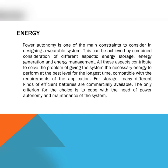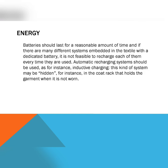For storage, many different kinds of efficient batteries are commercially available — for example, lithium-ion batteries. The criteria for choice is to cope with the need for power, autonomy, and maintenance of the system. Batteries should last for a reasonable amount of time, and if there are many different systems embedded in the textiles with dedicated batteries, it is not feasible to recharge each of them every time they are used. Automatic recharging systems should be used — for instance, inductive charging, which may be hidden in the coat rack that holds the garment when it is not worn.